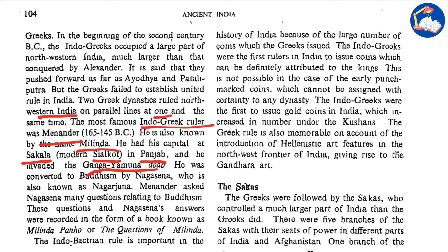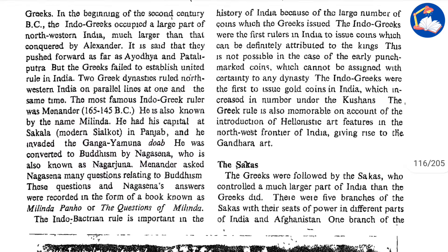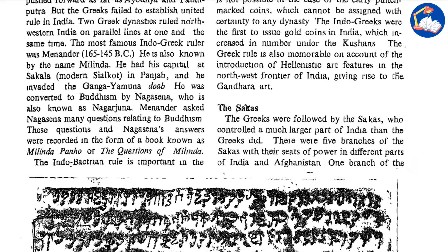Doab basically means the convergence of two rivers — in this case, the Ganga and Yamuna. Menander was converted to Buddhism by Nagasena, who was also known as Nagarjuna. Menander asked Nagasena many questions relating to Buddhism, and these questions and Nagasena's answers were recorded in the form of a book known as the Milindapanha, or the Questions of Milinda.